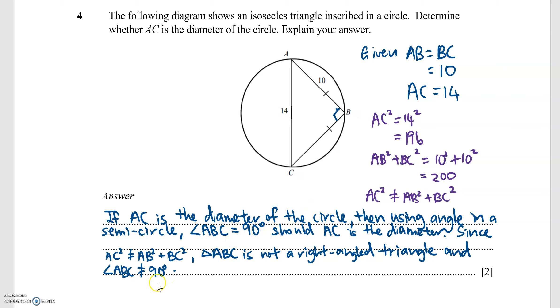My answer would be as follows: If AC is the diameter of the circle, then using angle in the semicircle, angle ABC is 90 degrees should AC be the diameter. Since AC squared is not equal to AB squared plus BC squared, then triangle ABC is not a right angle triangle, and we do not have angle ABC equal to 90. Therefore, AC is not the diameter of the circle for this question.